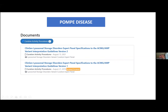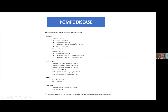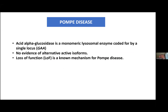This shows again the complexity of such work. The idea is to classify all these variants into one of the ACMG categories. There are a few things very important about Pompe disease: there is only one gene encoding the enzyme, there is only one isoform — which makes things easier — and we know that loss-of-function variants are a known mechanism.